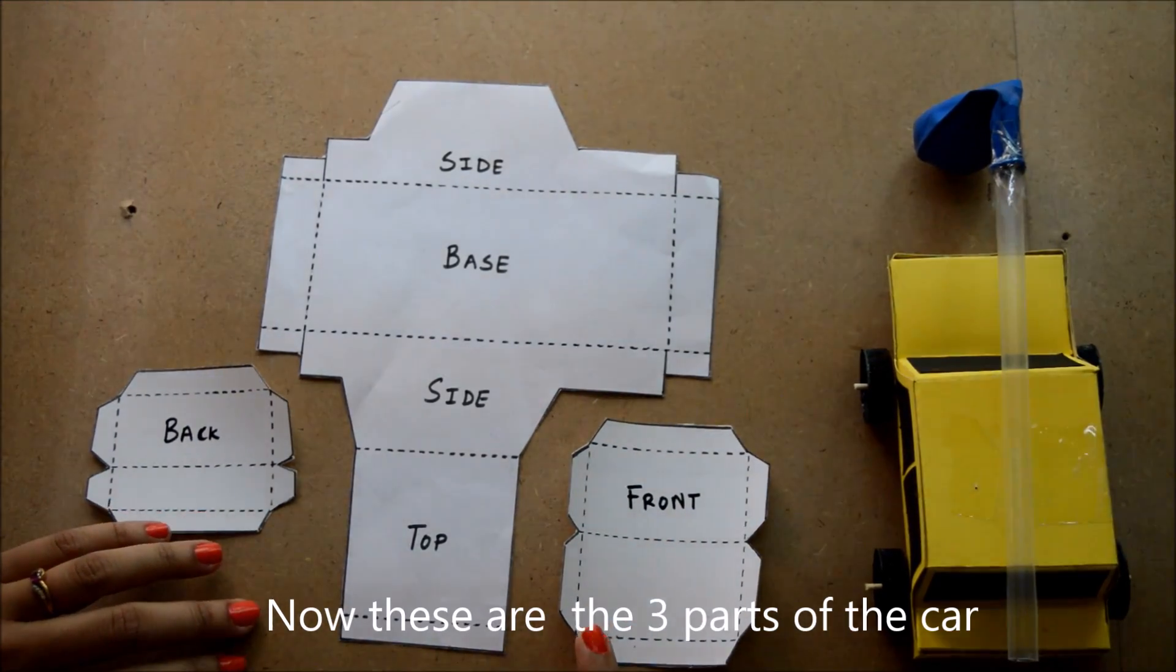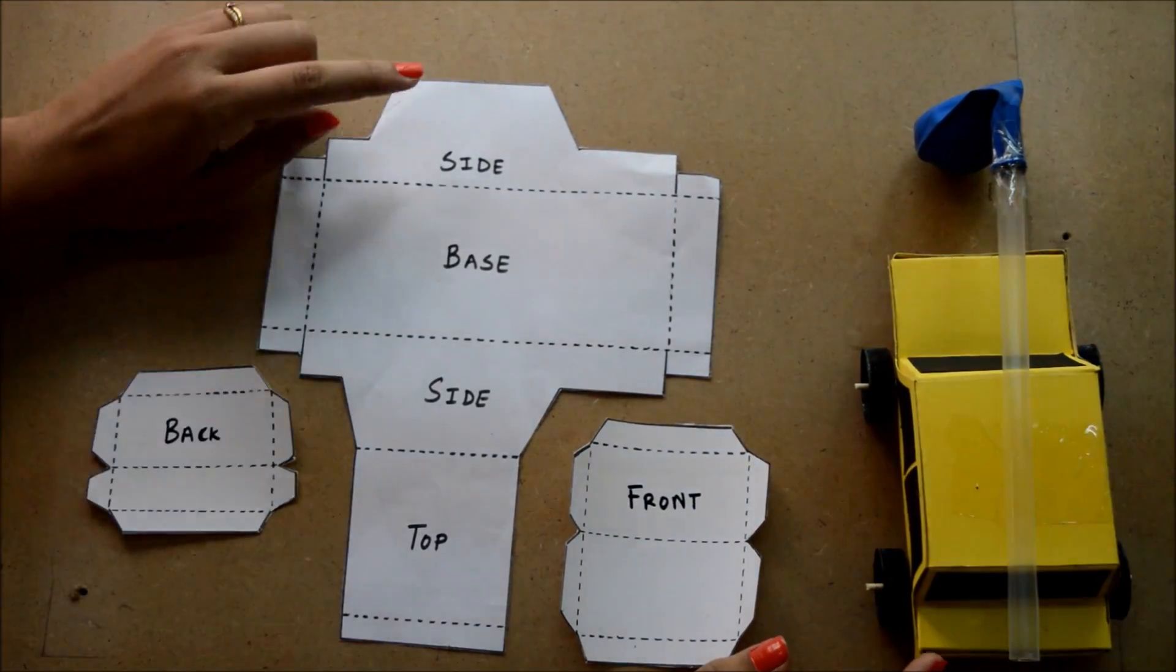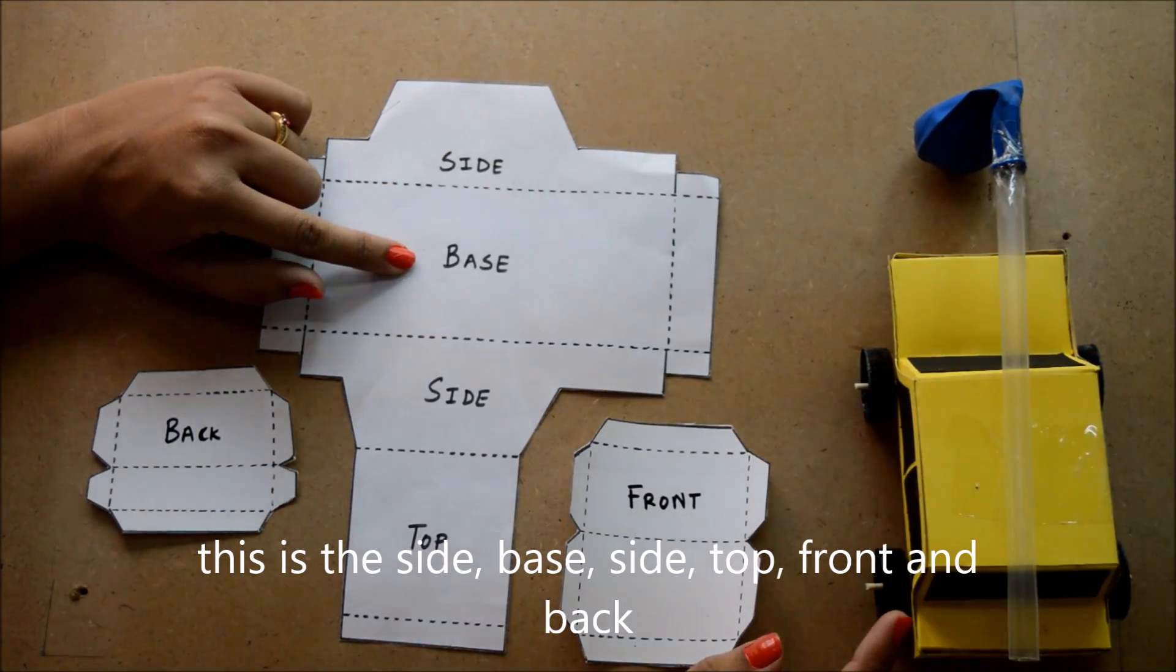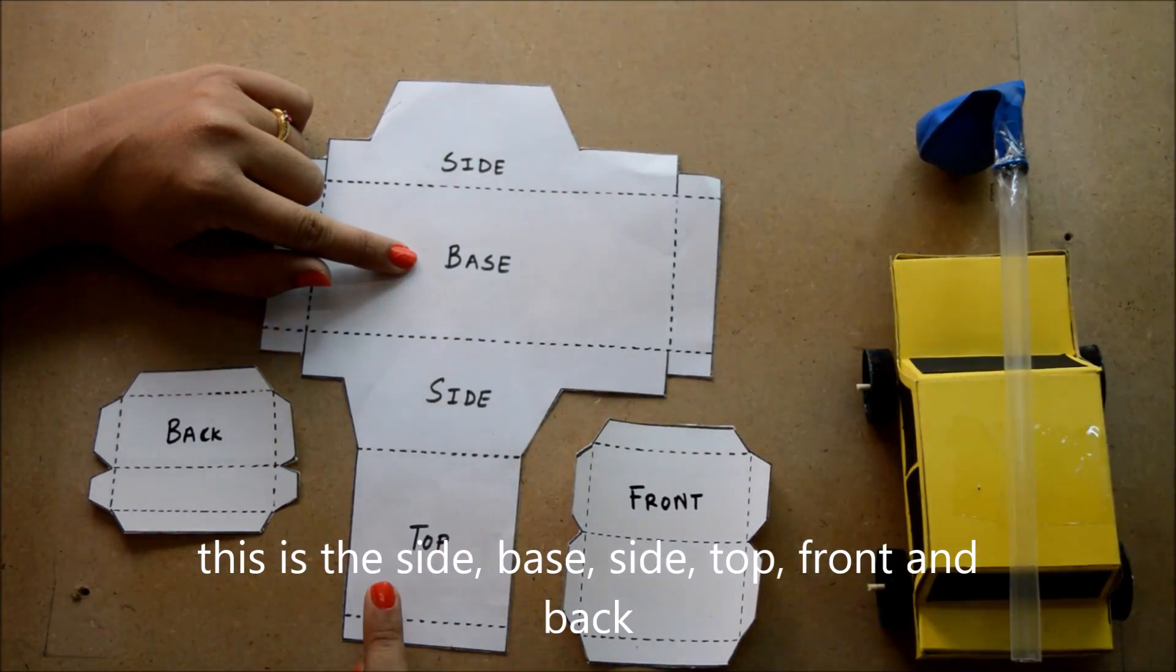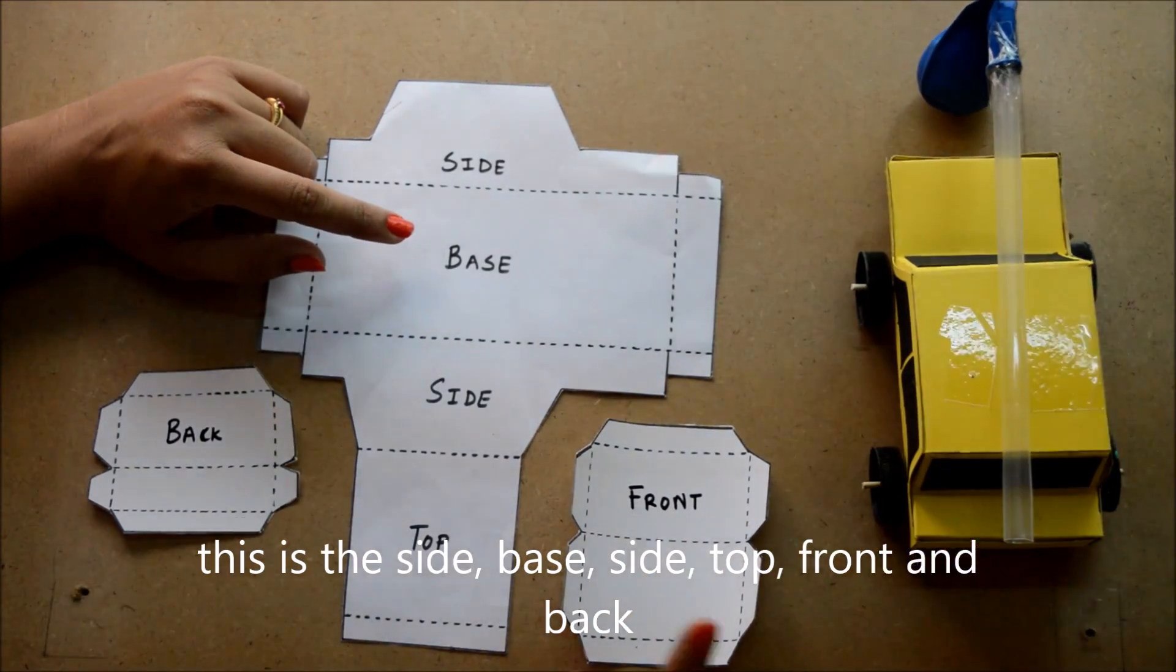Now these are the three parts of this car. This is the side, base, side, top, front and back.